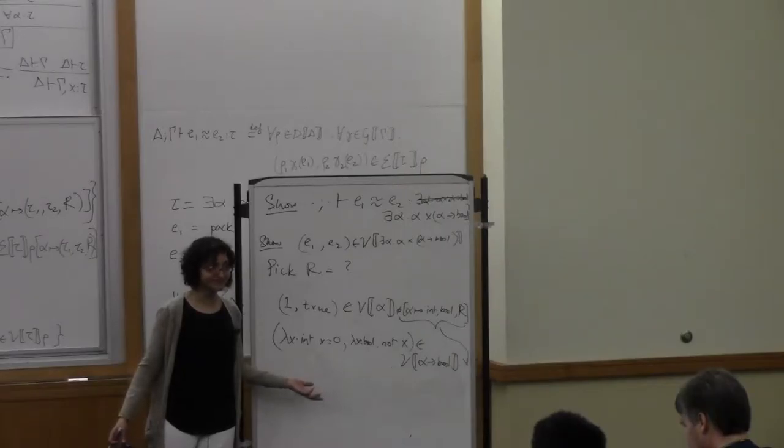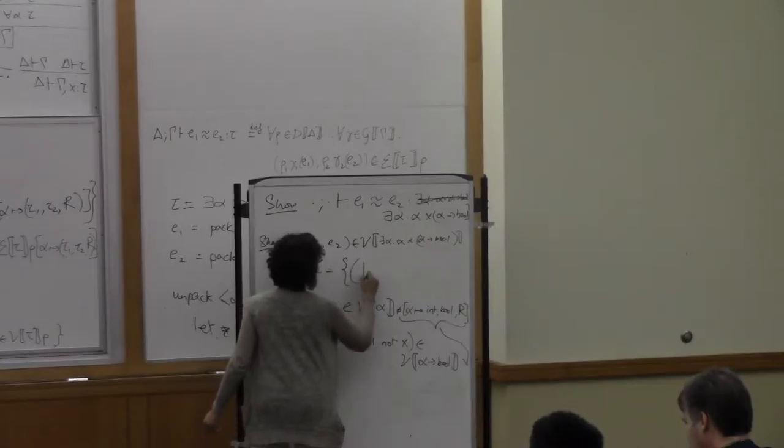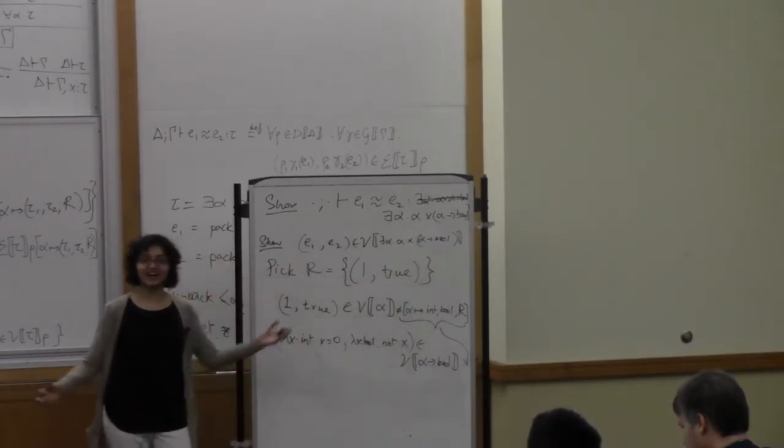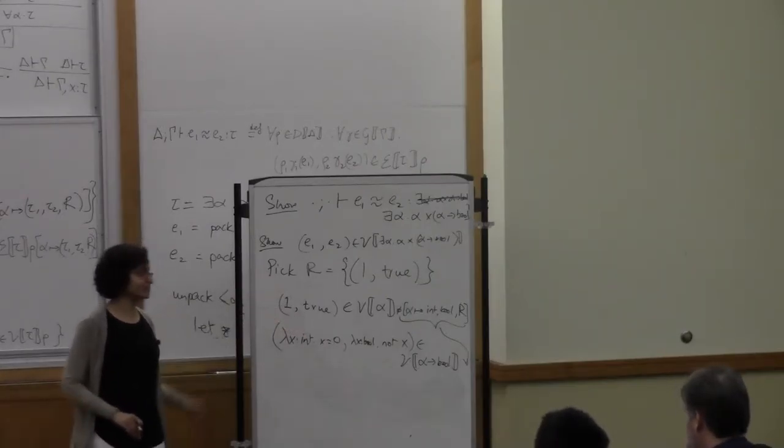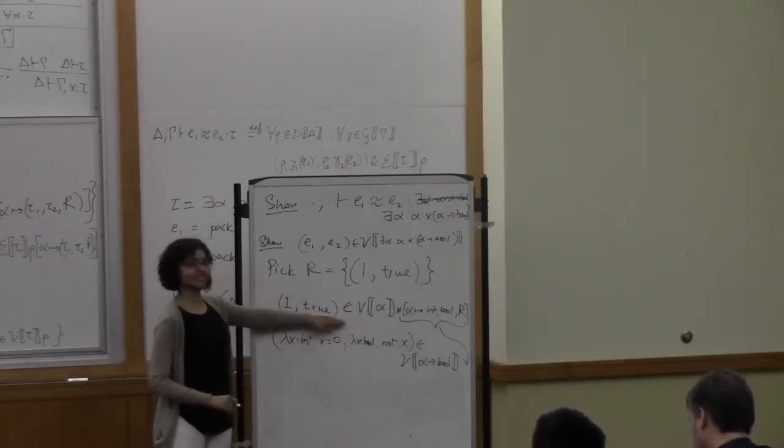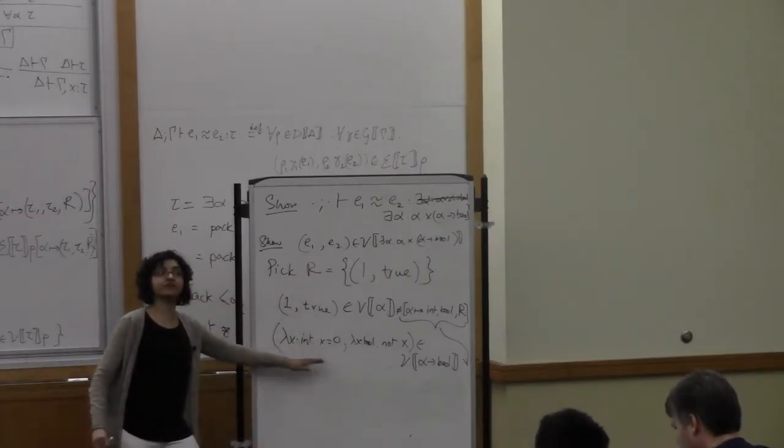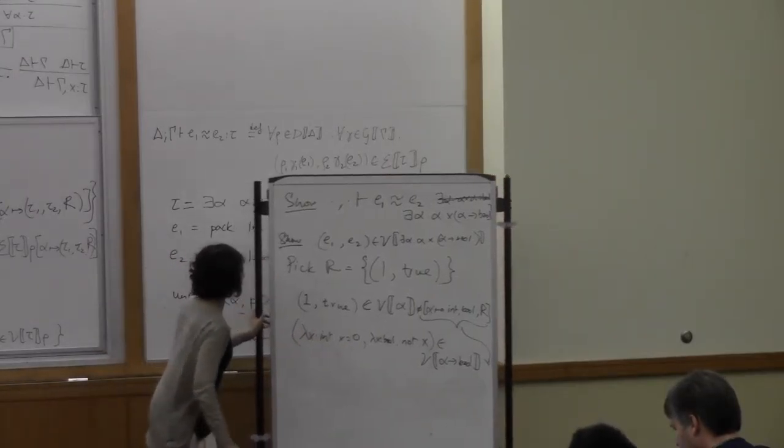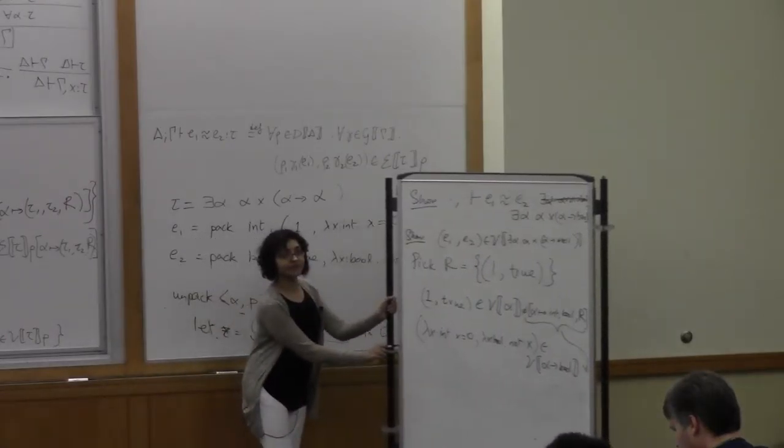What is R? So if we picked R to be that, and we can do this with guesswork, right? So far, examining the first statement we have to prove, it looks like R should be that relation. But let's make sure that R is going to work for the second bit that we have to prove. We still have to prove that the second components of those pairs are related.